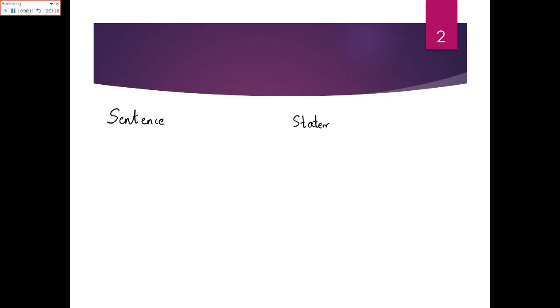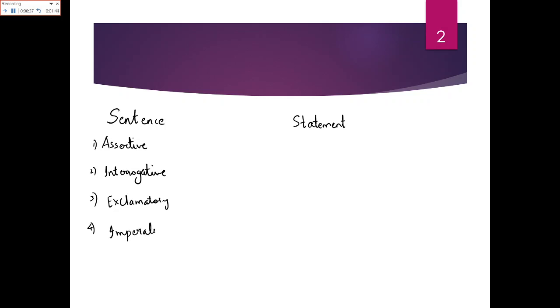Going back to your English lessons, you have learned various types of sentences. The very simplest sentence was the assertive sentence, then you had interrogative sentence, exclamatory sentence, and imperative sentence. These were the four types of sentences you had learned in English.